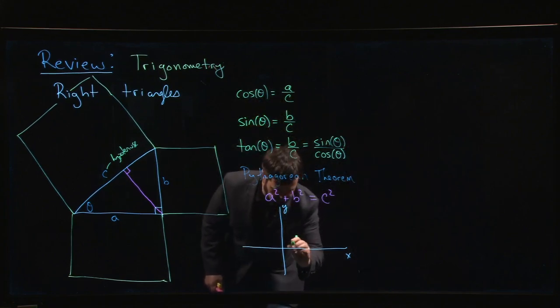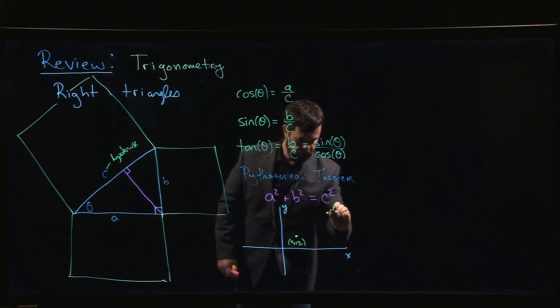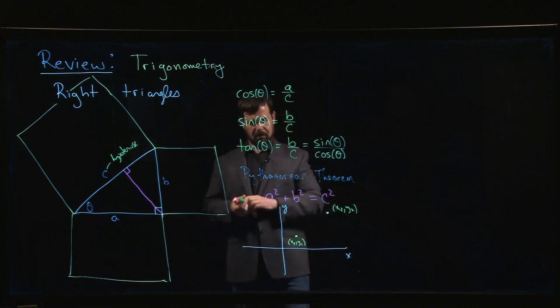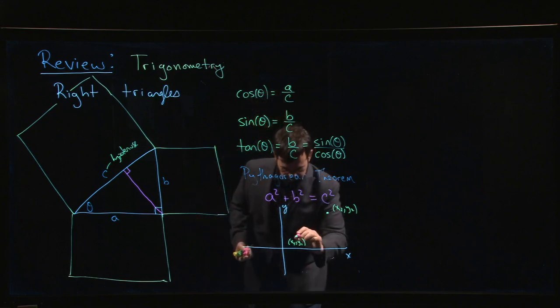So if you have two points in the plane, so let's say you have a point here, x1, y1, and somewhere else, you have a point x2, y2. And you want to know how far it is from point 1 to point 2, point A to point B. You want to know that distance.